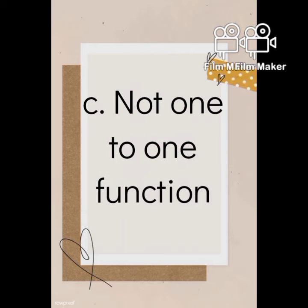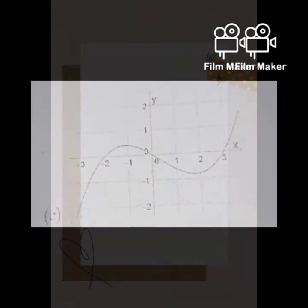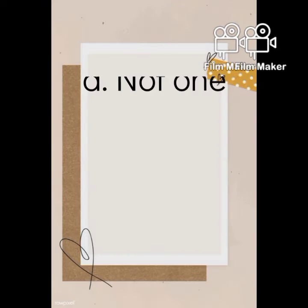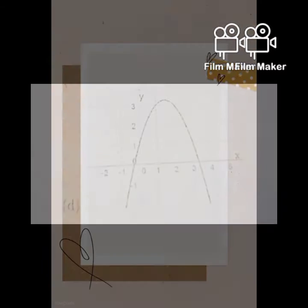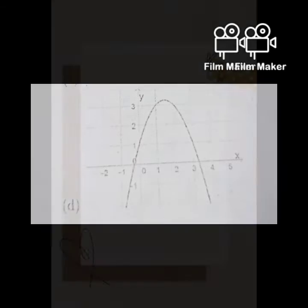Letter C is not a one-to-one function because it intersects the graph of the function at two points. Letter D is also not a one-to-one function — same reason as letter C, because it intersects the graph of the function at two points.